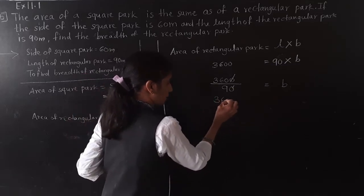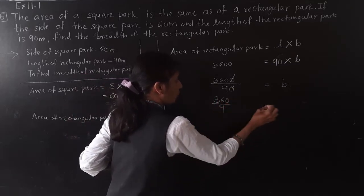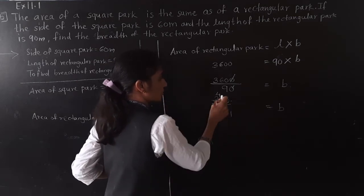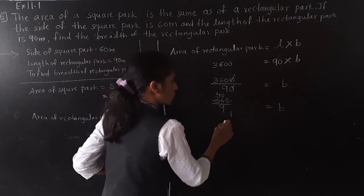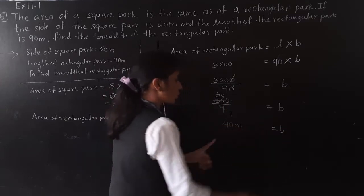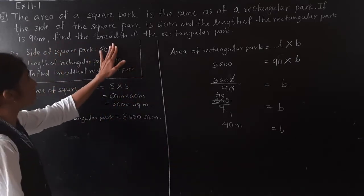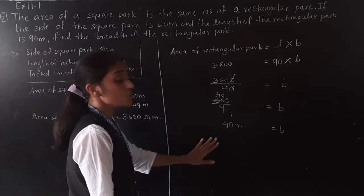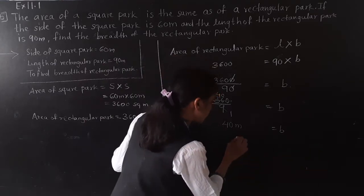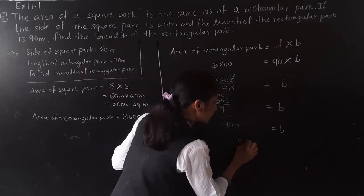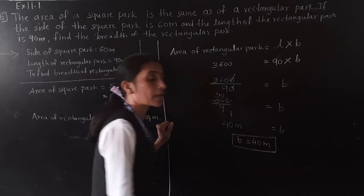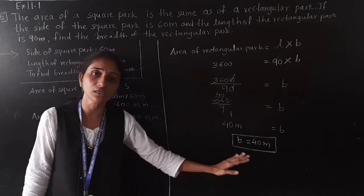360 divided by 9: 9 fours are 36, 9 zeros are 0, so we get 40 meter. Breadth equals 40 meter. So the breadth of the rectangular park is 40 meter.